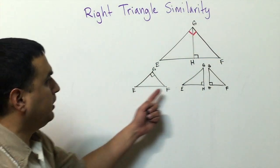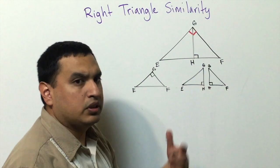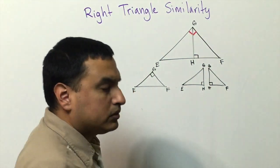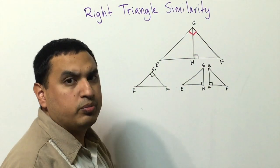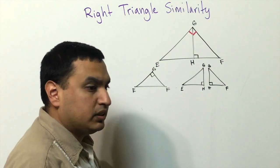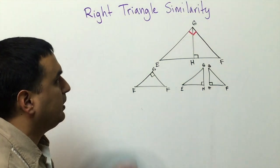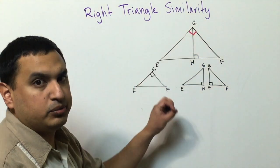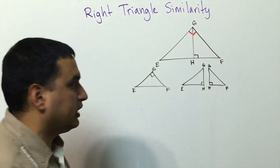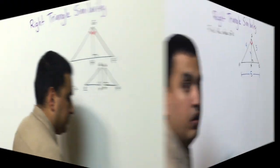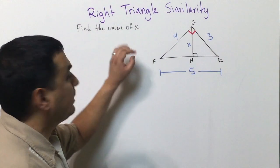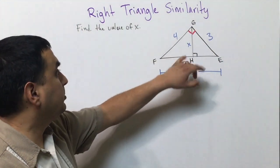All three of these triangles turn out to be similar, so we can use proportions and the things we've talked about in previous lessons to find different measurements. Now I'm going to show you what I mean by inserting some numbers and finding the value of x.